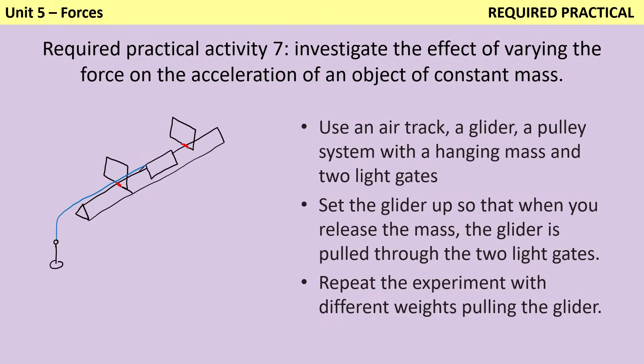Light gates are used to see how quickly the glider is moving at each point on the air track. It's possible to do this using two light gates, or also, depending on the exact practical you're doing, using one light gate and using this together with the length of time that the glider is traveling for. This will allow you to work out the acceleration. As we add more masses, the weight or the force increases, and therefore the glider accelerates faster.